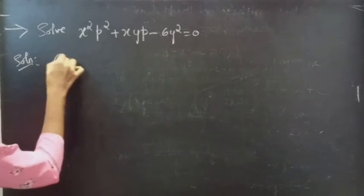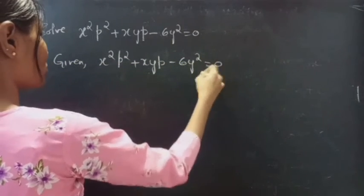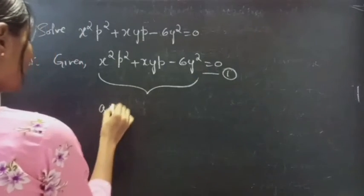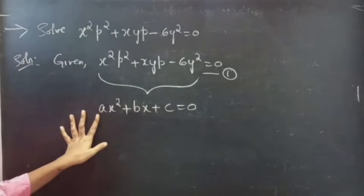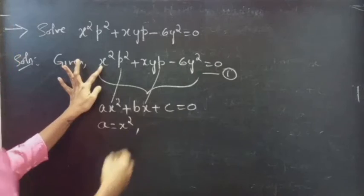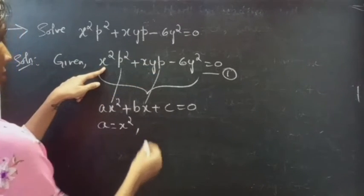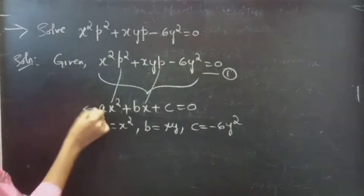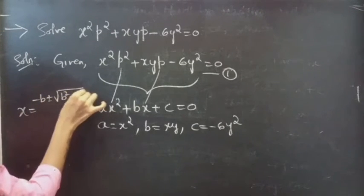Given equation: x squared p squared plus xy·p minus 6y squared equals zero. Consider it as equation number 1. This is a quadratic form in P. Comparing with ax squared plus bx plus c equals zero, we have a equals x squared, b equals xy, and c equals minus 6y squared.